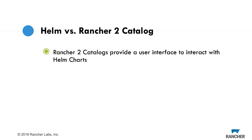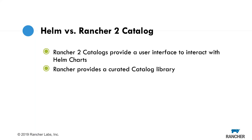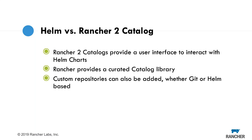Rancher provides a curated catalog library — Helm charts taken from Helm stable with added metadata: the questions.yaml and app readme, to give you the Rancher 2 catalog app interface. You can also add custom repositories, which can be Git or Helm-based for Rancher. If you want to run your own Chart Museum, or use S3 and generate your own index.yaml, you can do that. Chart Museum is nice and convenient because it automatically generates that YAML based on what you push into it.